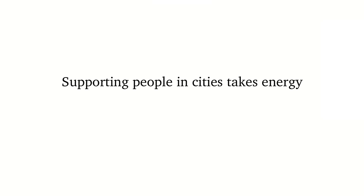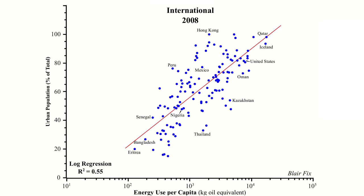Let's talk about this urbanization-energy use relationship. Here's international data — each dot is a country. On the horizontal axis is energy use per capita on a log scale, so each big tick mark is a factor of 10. On the vertical axis is the urban population as a percentage. Low-energy countries like Eritrea and Bangladesh have very few people in cities — around 20%. As you ramp up energy use, getting to the U.S., Iceland, Qatar, you have almost 100% of the population in cities. The trend is what is important.